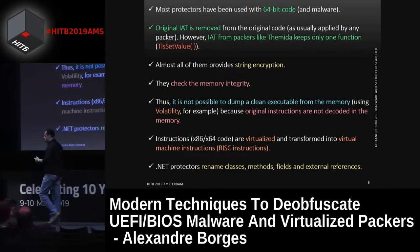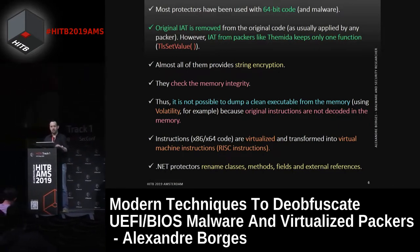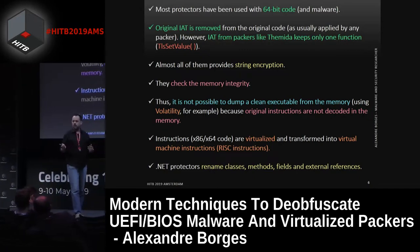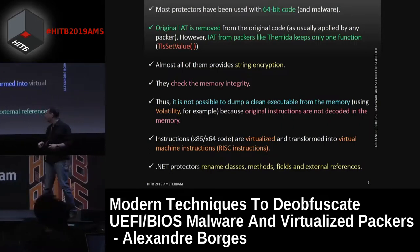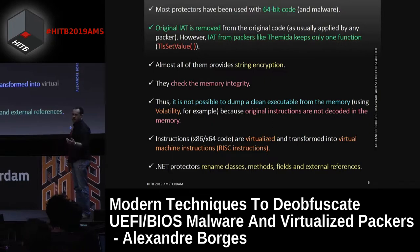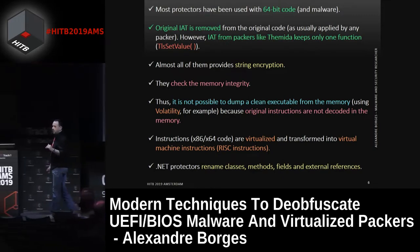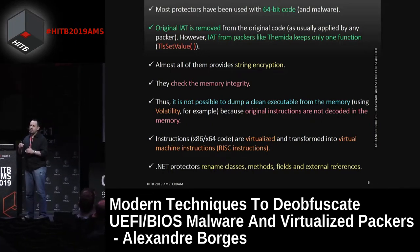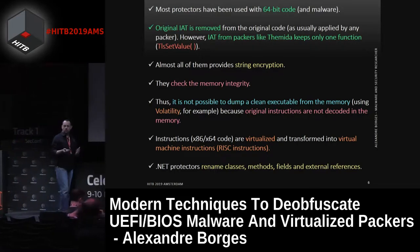This kind of protectors are usually used in 64-bit code and malware. These protectors try to encrypt and obfuscate strings — most of the time, the strings are encrypted. They try to check memory integrity. It's very hard to dump the malware from memory using Volatility, because most of the time we don't have all the instructions decrypted. This technique makes it almost impossible to dump malware from memory.